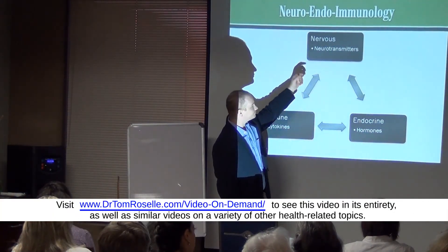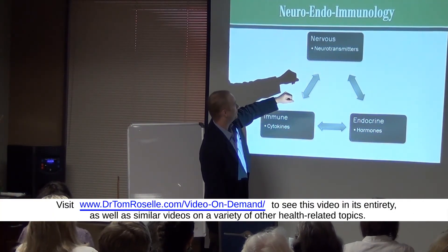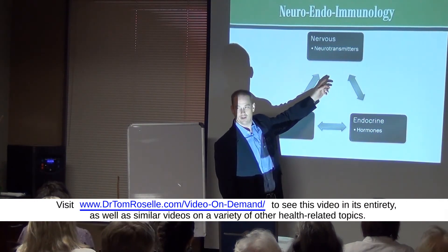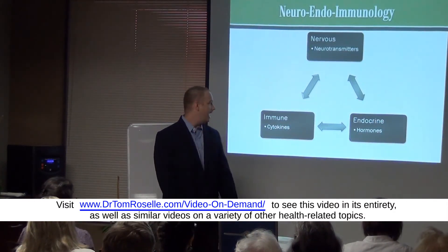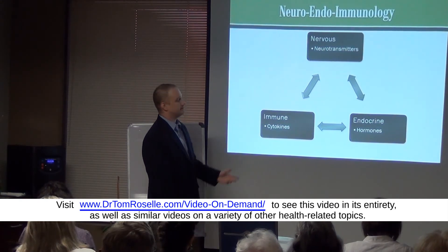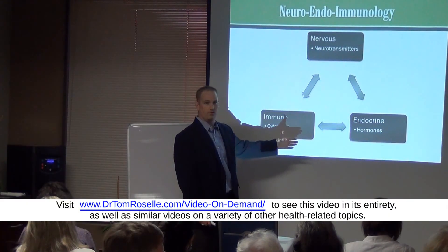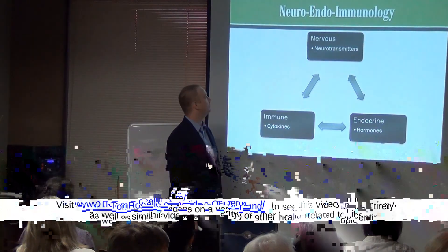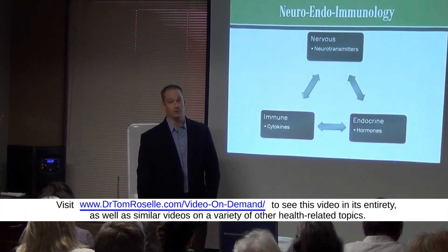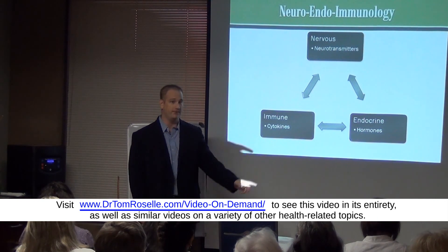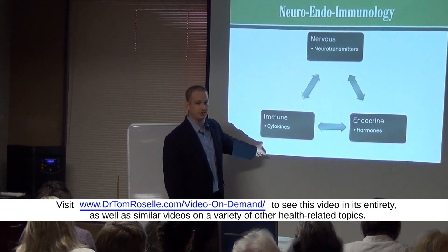You've got neurologists you go to for problems with the nervous system, for problems with neurochemistry and neurotransmitters. And what we've really come to realize is that you can't separate these out — they're really not different independent systems. The way we've started teaching it now is we call it neuroendoimmunology, because you can't remove one without having a change in the others.